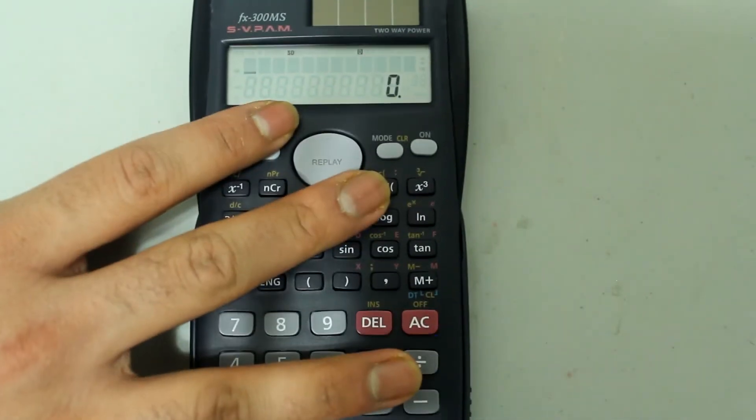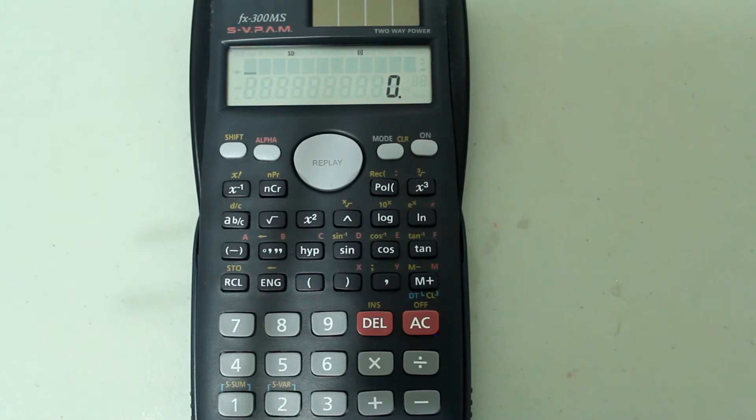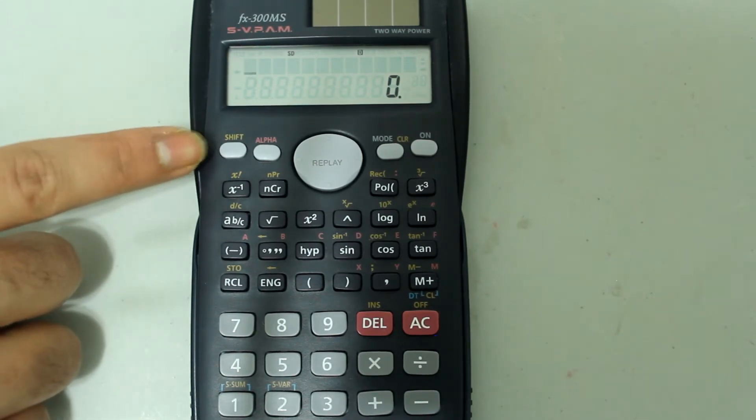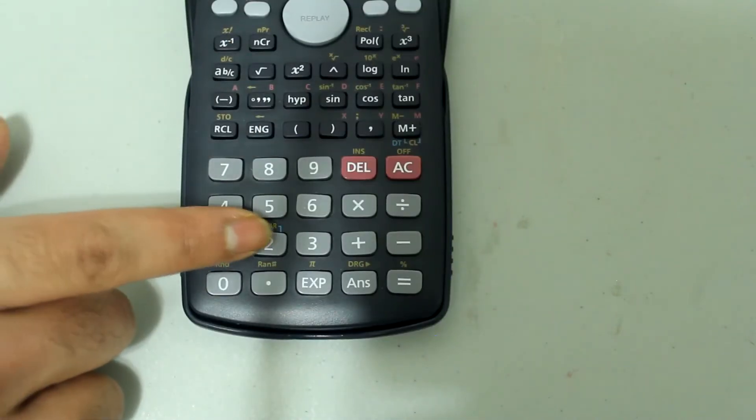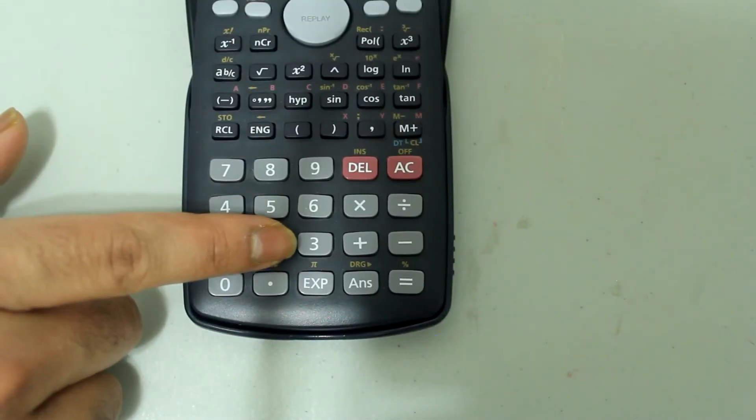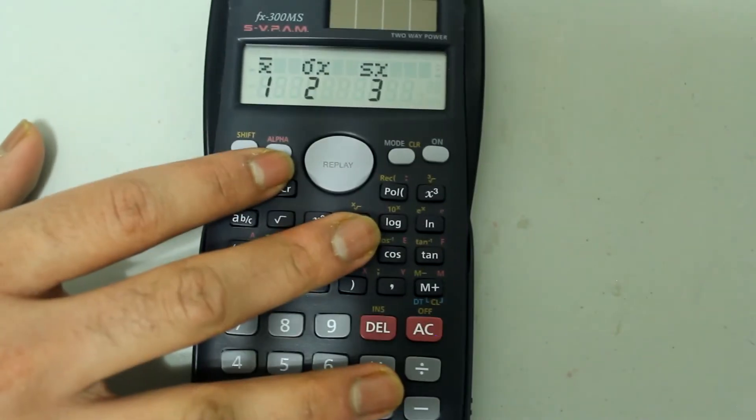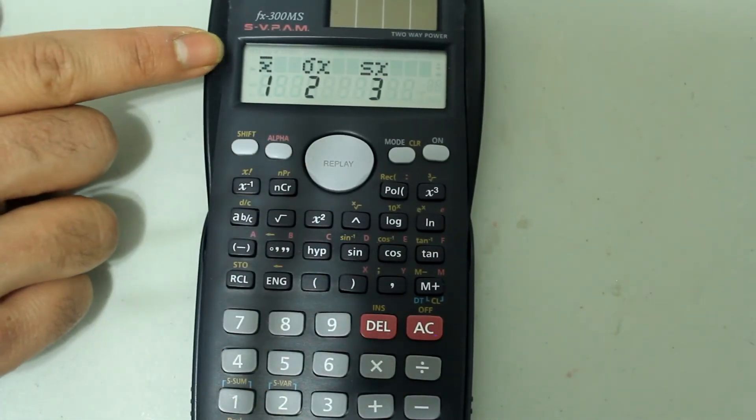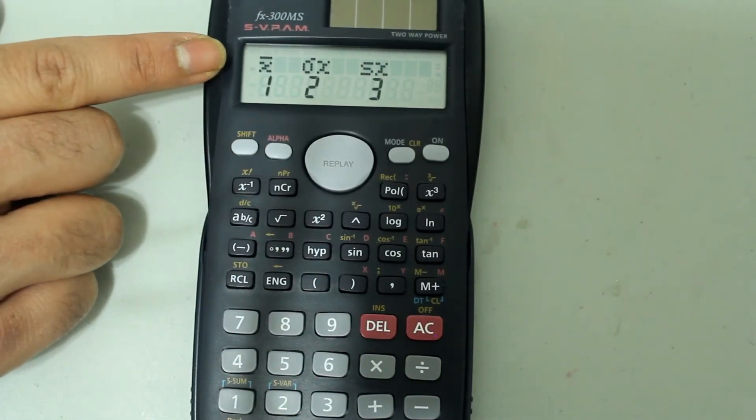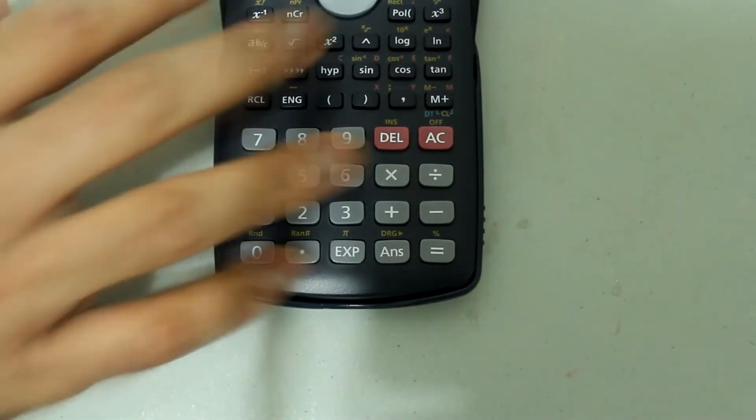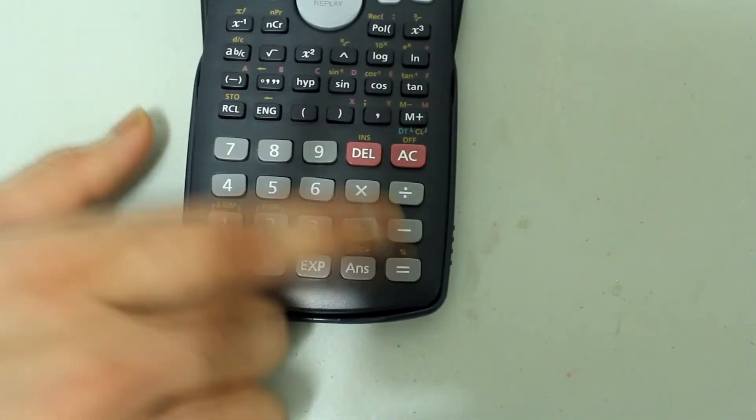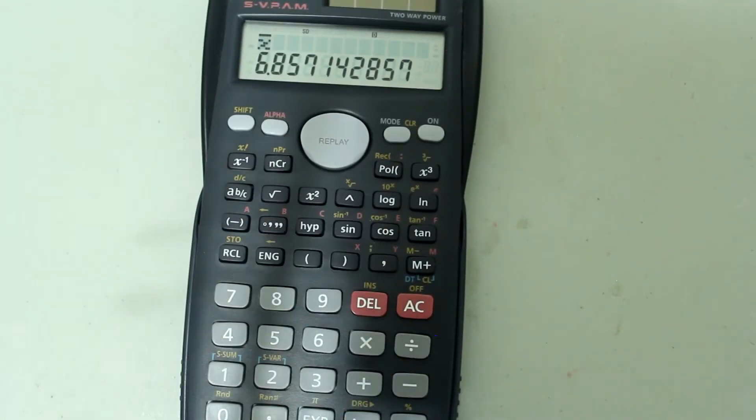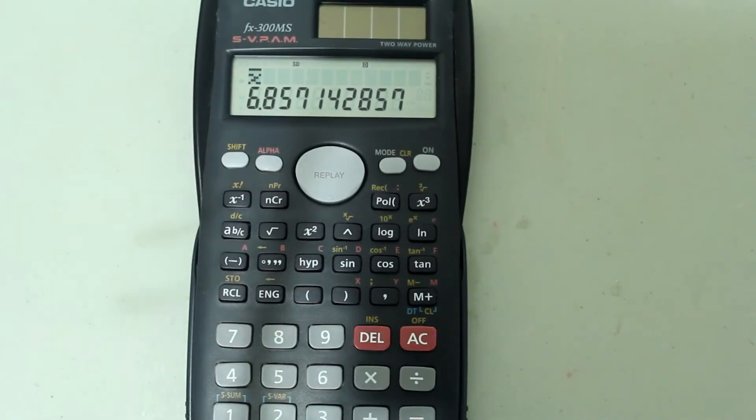Next we're going to find the arithmetic mean for this set, so press shift and number 2 to select S var and this comes up. The X with the bar on top is the arithmetic mean, so we're going to press 1 on the number pad, and once this pops up on the screen press enter and we get the arithmetic mean for this set.